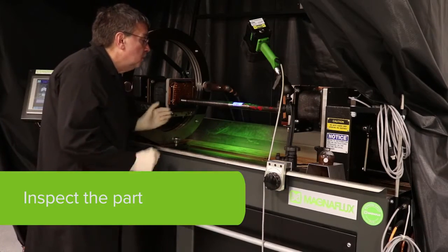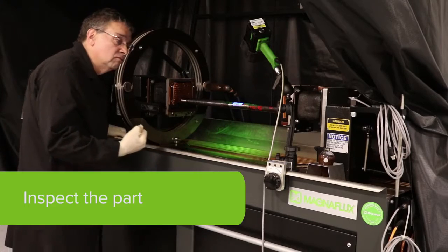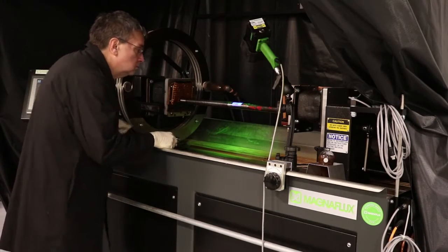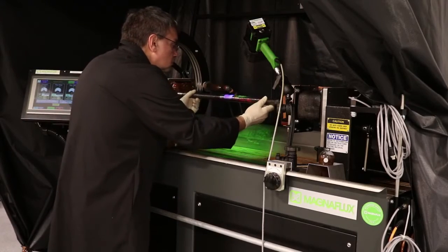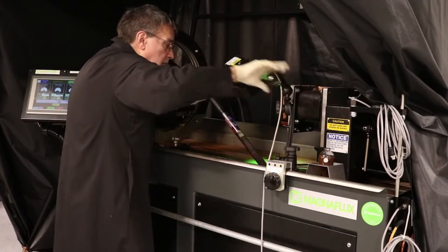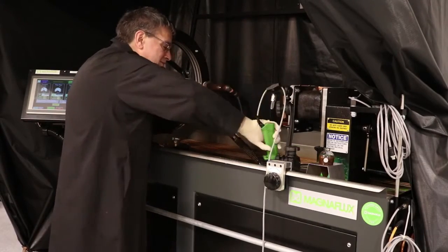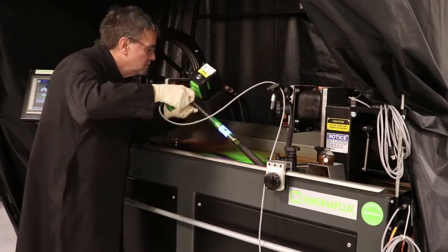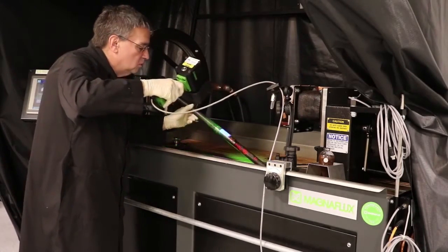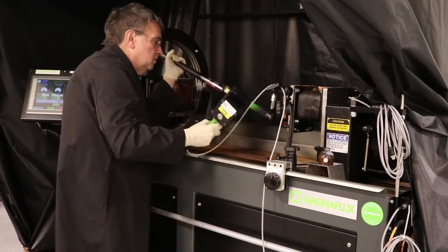Once you have done that, then you would inspect the part for any defects. To inspect the part, you may actually have to unclamp the part to physically look at it. And depending on the part geometry and configuration, you will inspect all areas. Once that inspection is done, you can place the part back in.